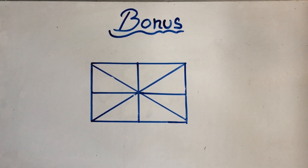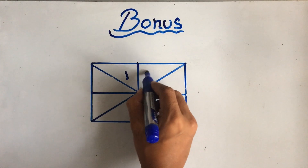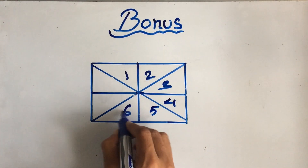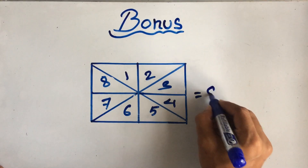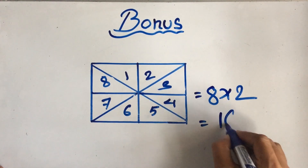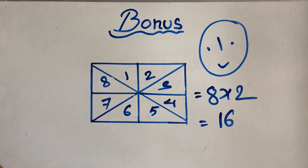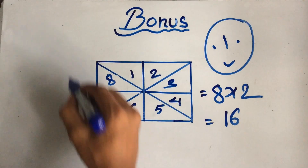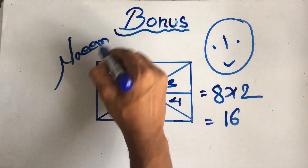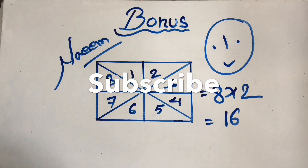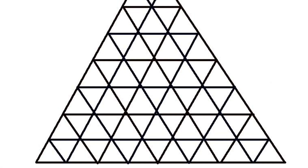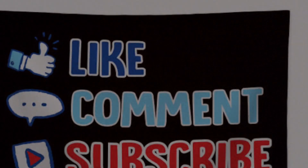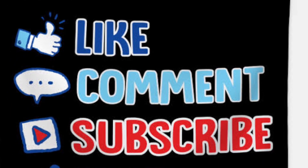Next bonus level, a bit harder. Count: one, two, three, four, five, six, seven, eight, then multiply by two: eight times two equals sixteen. It's easy! Guys, please subscribe. My name is Hossain from Bangladesh. I'm not a great speaker but I'm trying to make these kinds of videos, so please support me. There's a puzzle question for you to solve — solve it and I'll give you a gift.